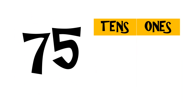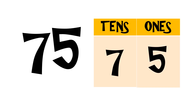Now, let us know what number is in the tens place. We have seven. How about in the ones place? We have five. Therefore, seventy-five makes seven tens and five ones, or seventy-five ones.